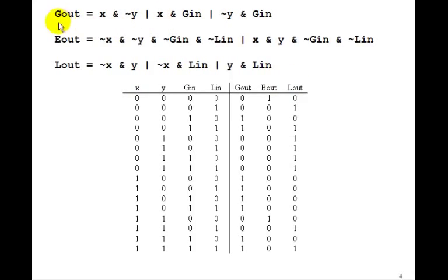So we've got a logic equation for Gout, Eout, and Lout. And therefore, we've solved the little problem of a 1-bit comparator.